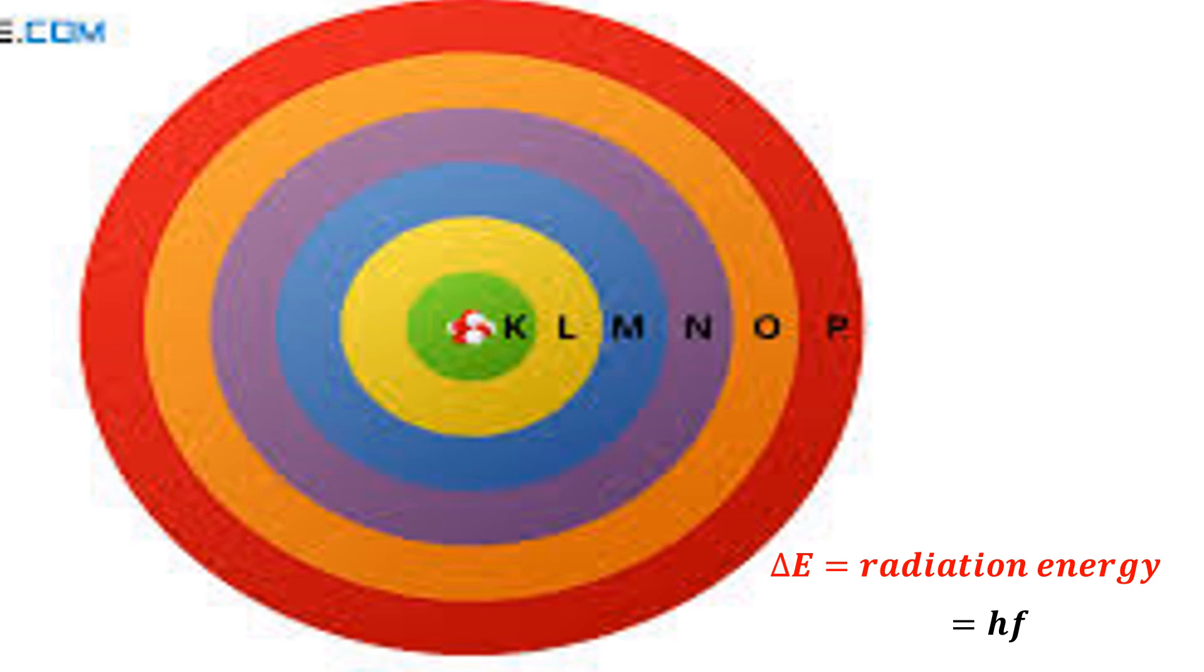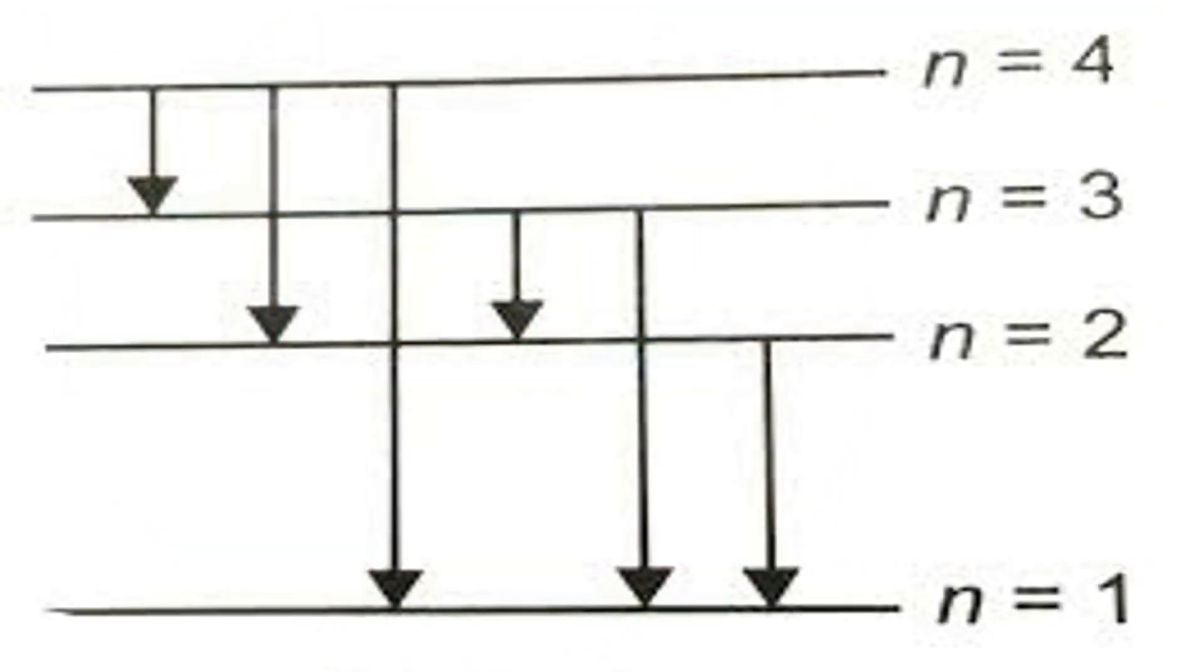So, Bohr calculated the energy differences of the various energy levels present in the hydrogen atom. And by this formula, he got the different frequencies of the EM radiations that could be emitted or absorbed by hydrogen.